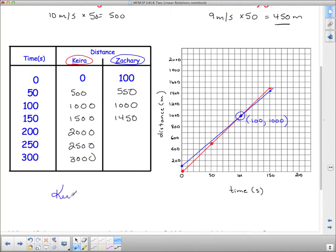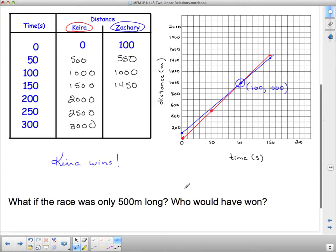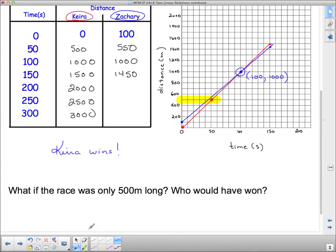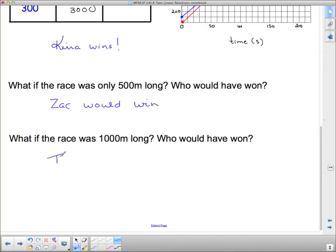Kira wins. Now what if the race was only 500 meters long? Well, if the race was only 500 meters long, we're talking about this line right here. And at 500 meters, Zachary was still ahead. So if the race was only 500 meters long, Zach would win. And then what if it was 1000 meters long? Well, if it was 1000 meters long, we're talking about that point there. And it would be a tie.